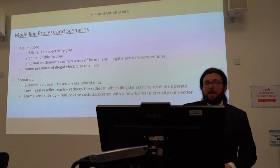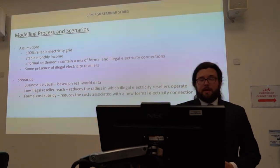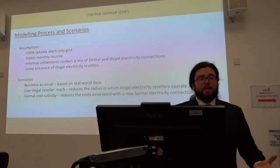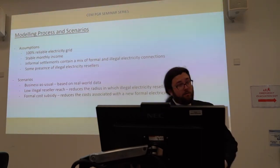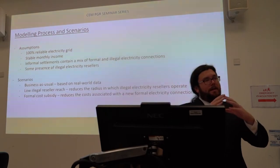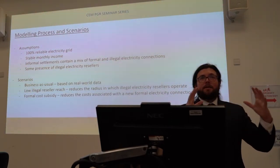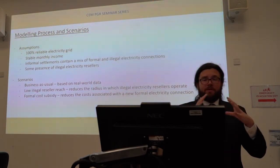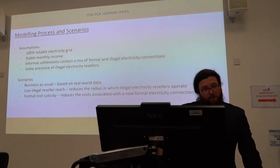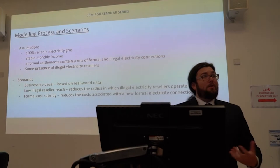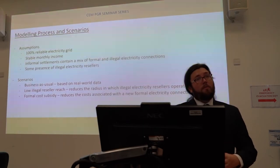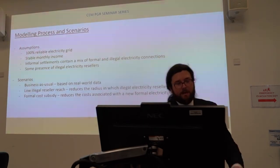From these assumptions I've constructed three scenarios to analyse. First, a business-as-usual scenario based on real-world economic data from around 2015–2016. Second, a low illegal reseller reach scenario, where illegal electricity resellers have a reduced sphere of influence — they can't connect as many unconnected agents around them. Third, a formal cost subsidy scenario, which reduces the cost associated with a new formal electricity connection within the model, addressing the economic policy question.